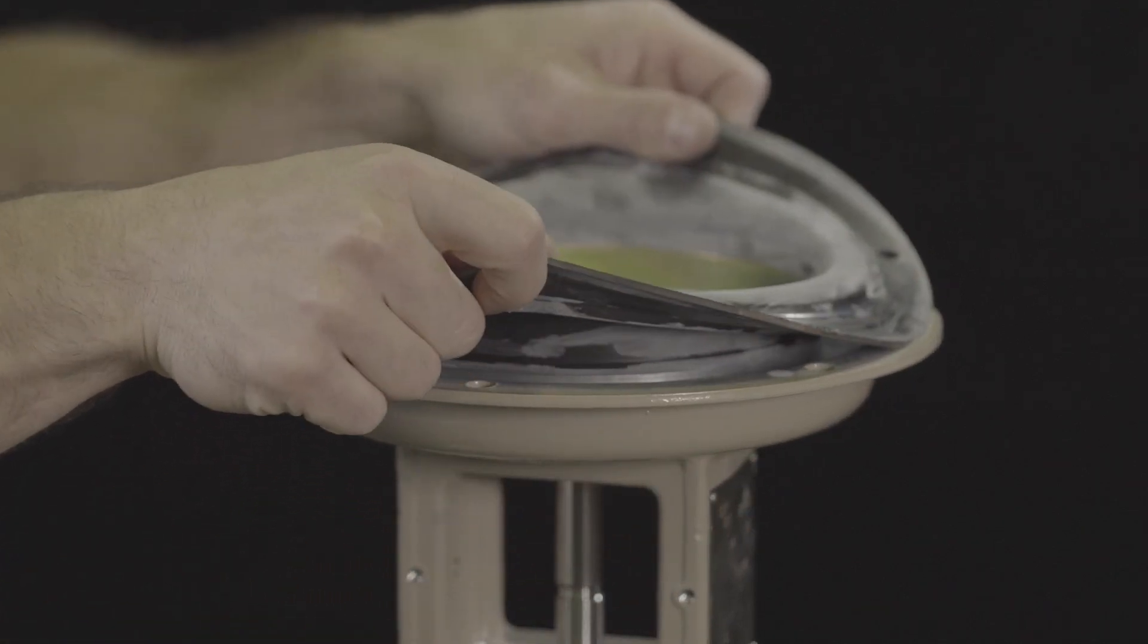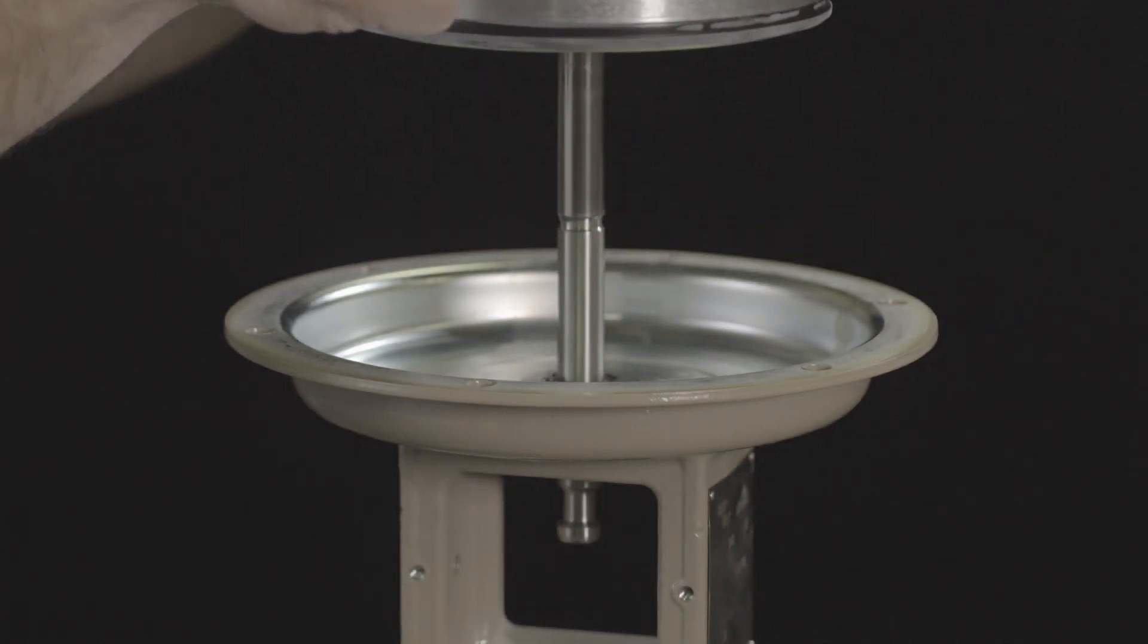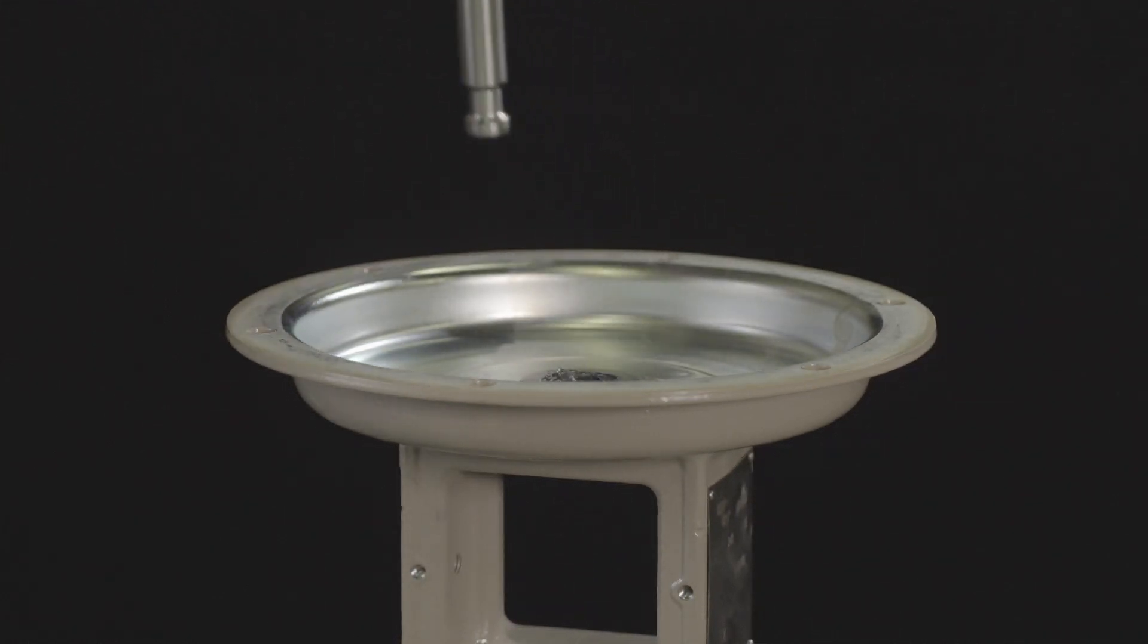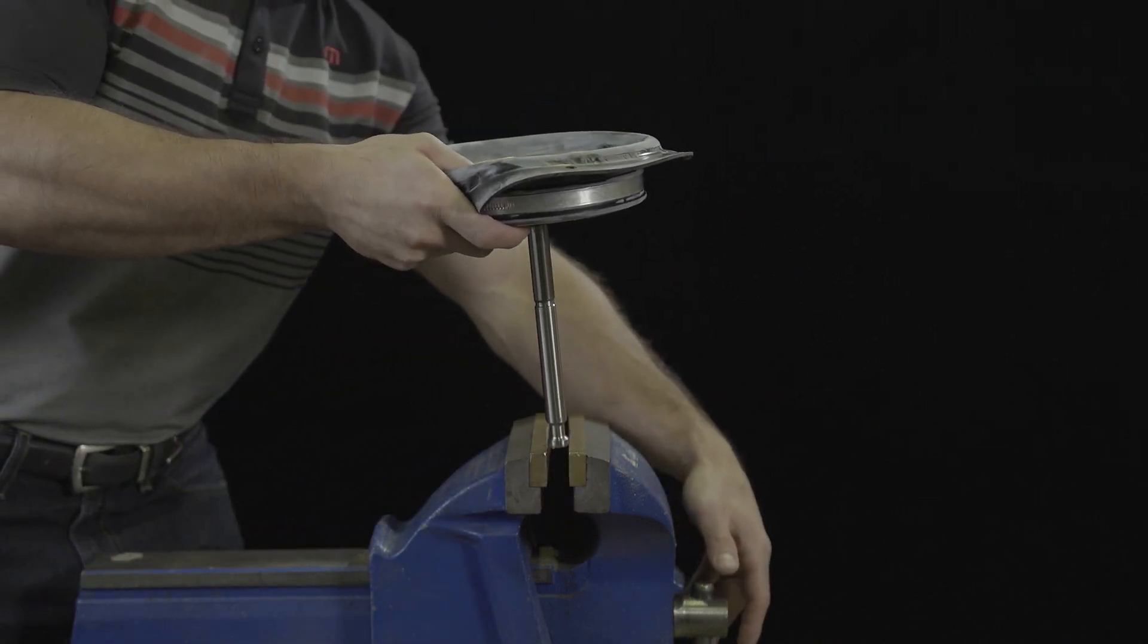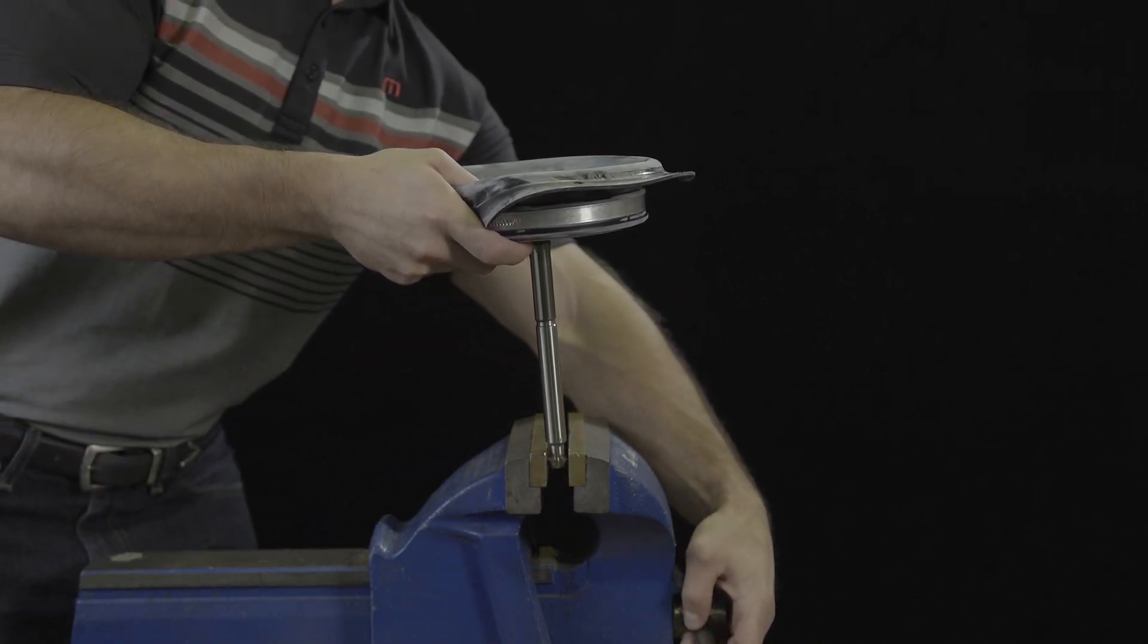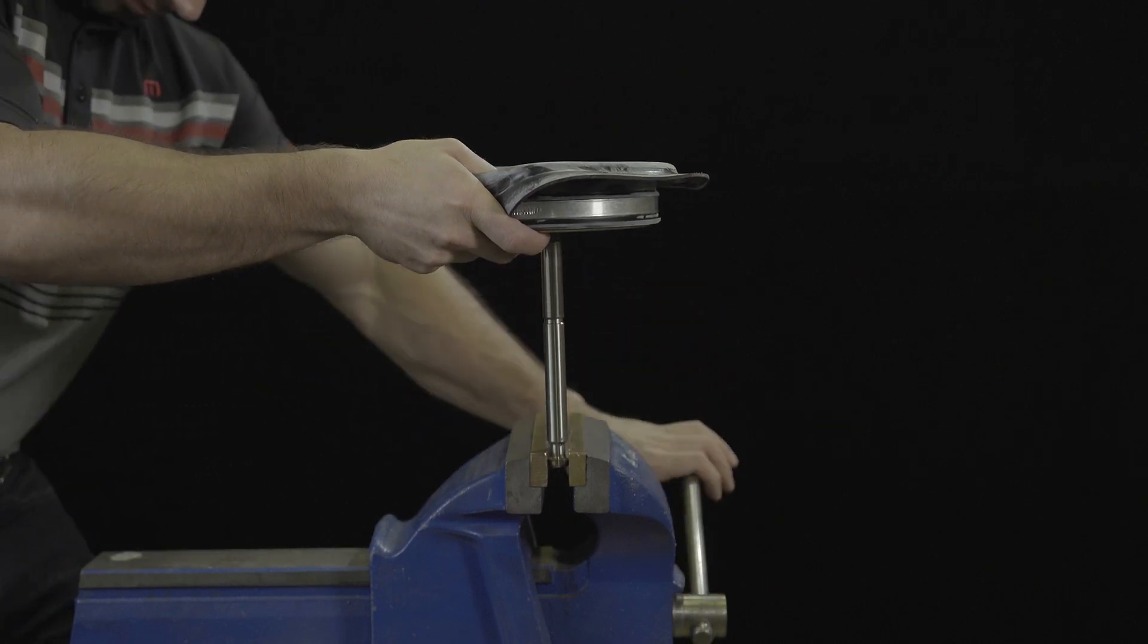Pull the diaphragm plate assembly consisting of the diaphragm plate, diaphragm, and actuator stem out of the bottom diaphragm case. Clamp the bottom section of the actuator stem into a vise using protective jaws ensuring the actuator stem is not damaged.